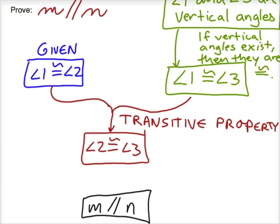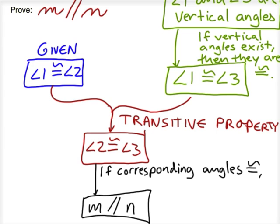And why is that true? It's true because if we have corresponding angles that are congruent, then the lines are parallel. So, we're done. Thank you.